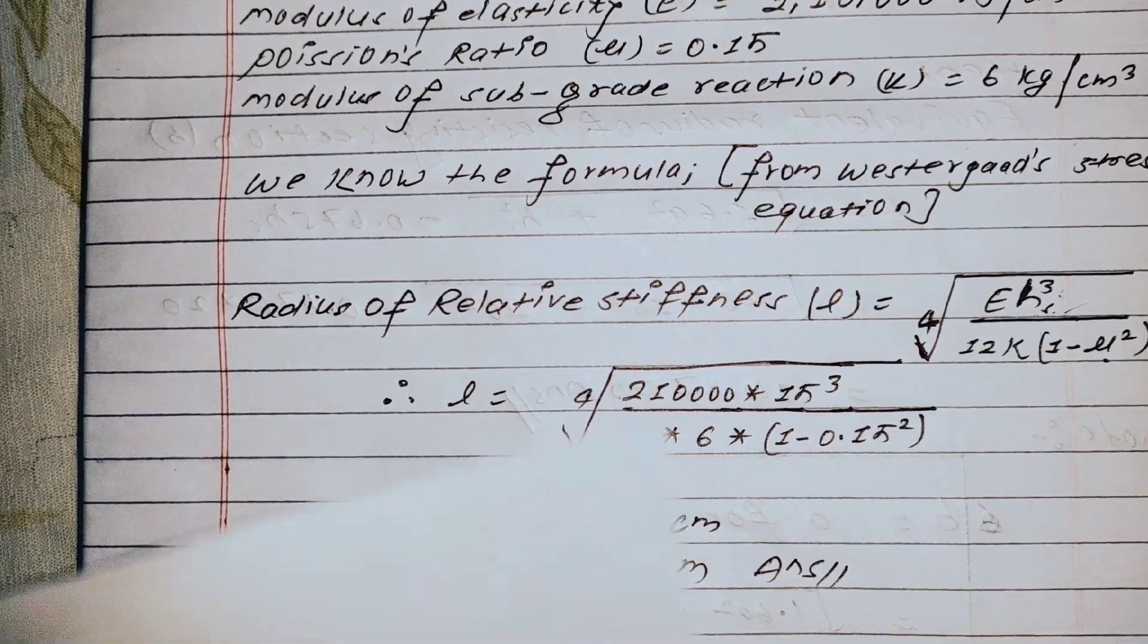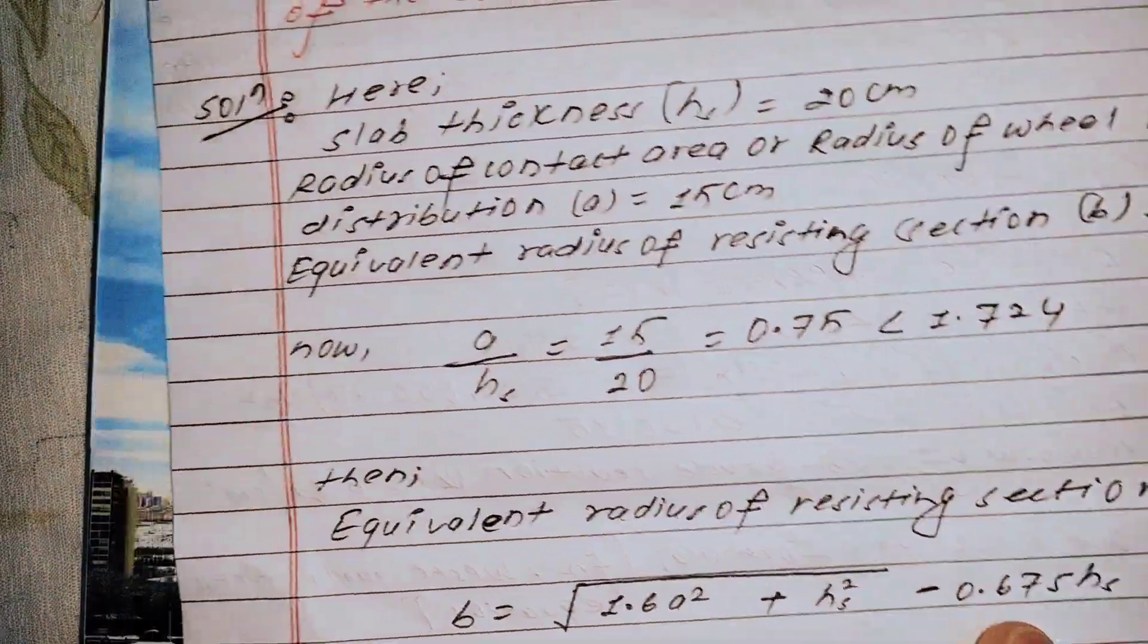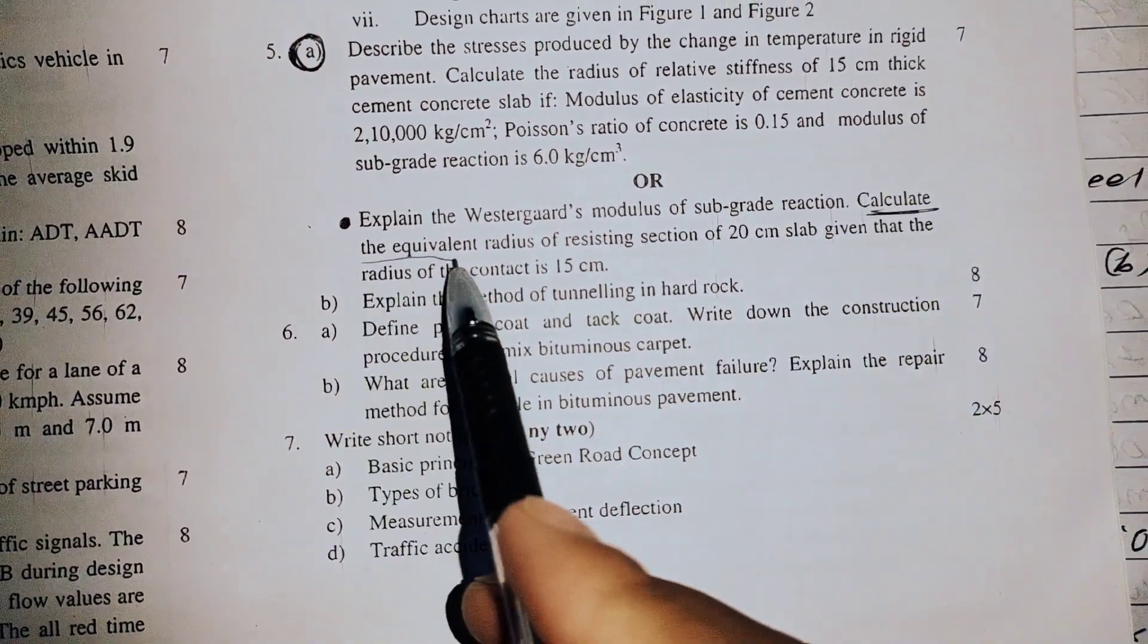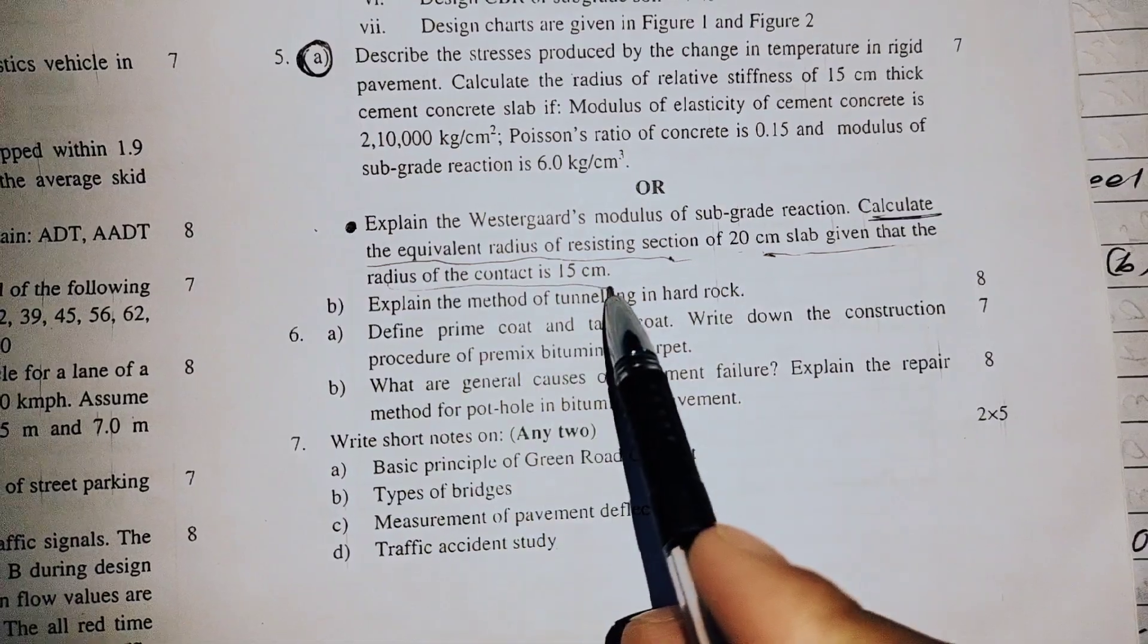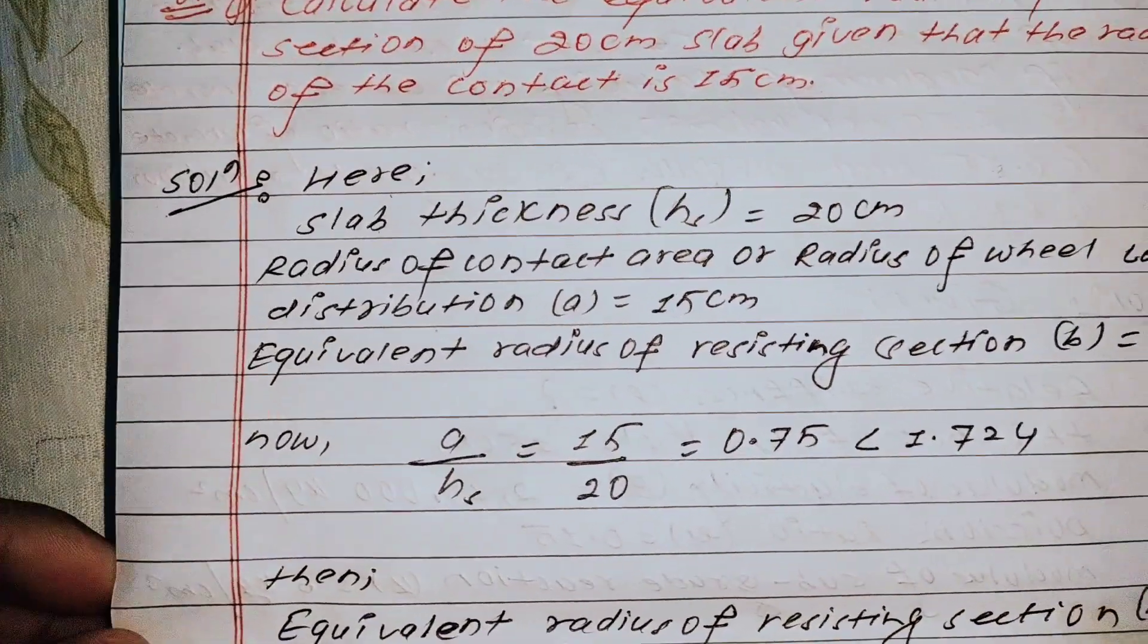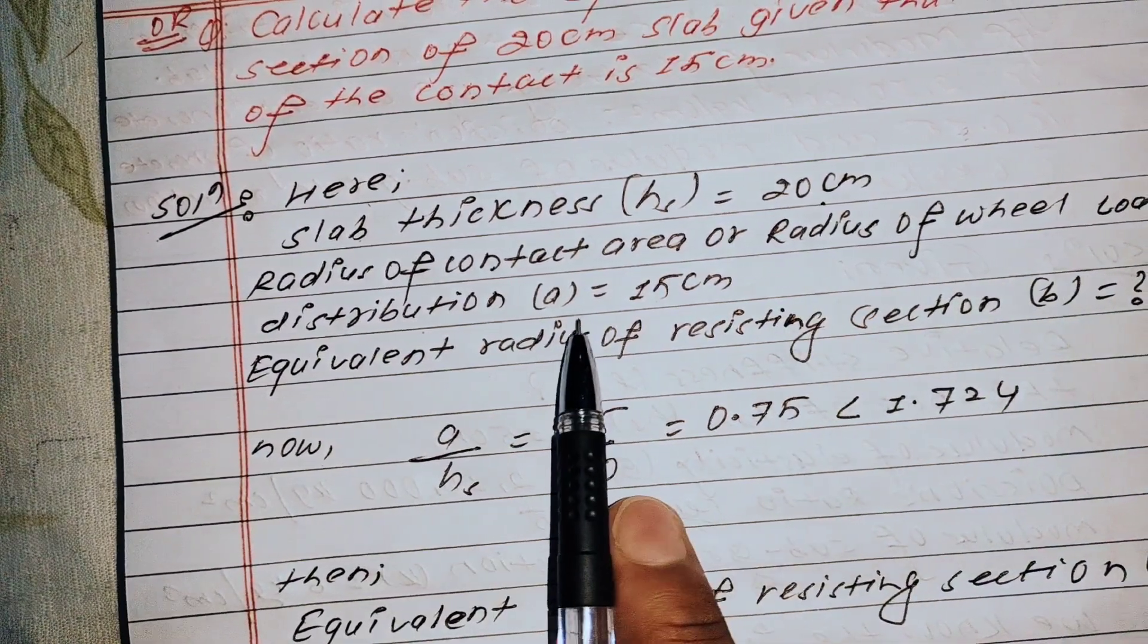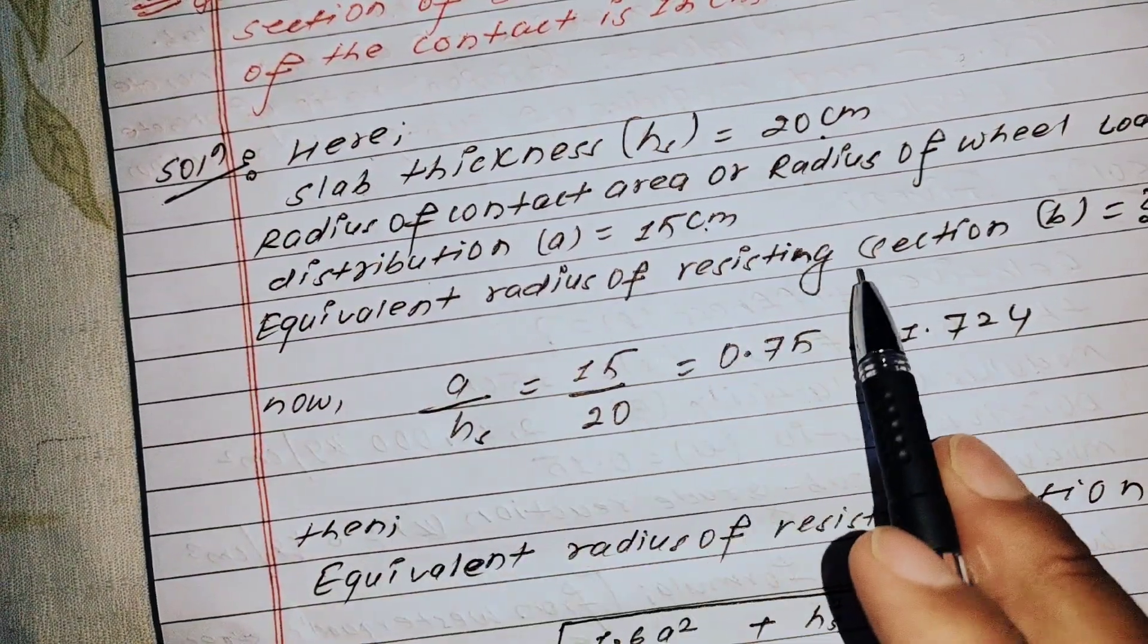Let's move to another question from 2017 Fall. The question is: Calculate the equivalent radius of resisting section for a 20 centimeter slab, given that the radius of contact is 15 centimeter. So slab thickness is 20 centimeters and radius of wheel load distribution (contact area) is 15 centimeters.